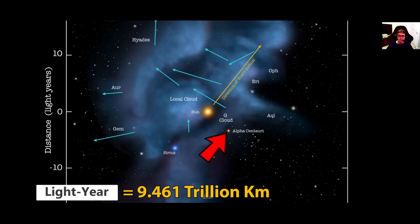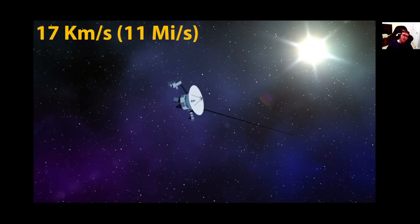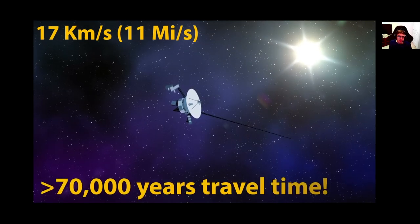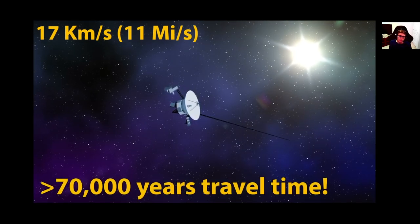The star Proxima Centauri here is the closest other star to us other than our sun. But it's still 4.24 light years away from us. To put that into perspective, if it was heading in the right direction, it would still take Voyager 1 over 70,000 years to reach it.